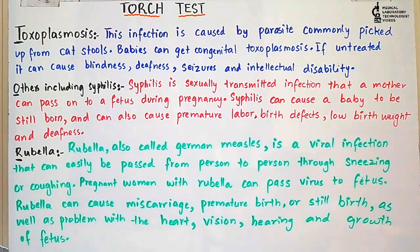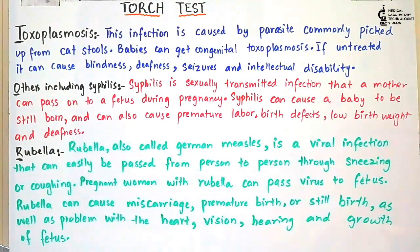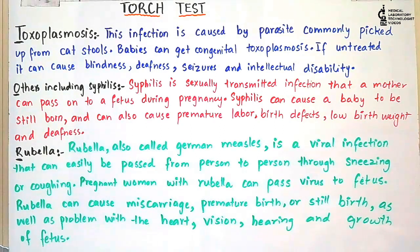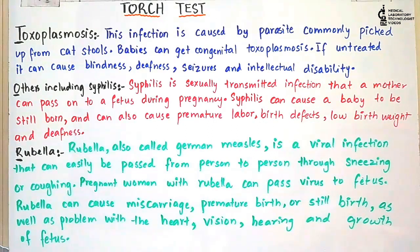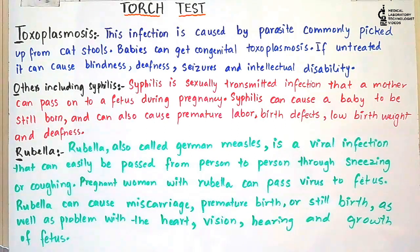O stands for Others, which includes syphilis — and sometimes HIV is also included, but mostly syphilis is listed. Syphilis is a bacterial infection caused by Treponema pallidum, and it is a sexually transmitted infection that a mother can pass to the fetus during pregnancy. Syphilis can cause a baby to be stillborn, and can also cause premature labor, birth defects, low birth weight, and deafness. In some areas, a syphilis test is also done as a separate mandatory test for pregnant ladies.